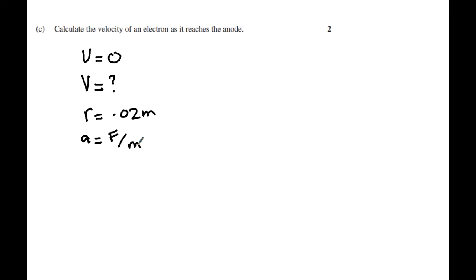Now you notice I've got u, v, r and a, and automatically I can actually determine the velocity by using the formula v squared is equal to u squared plus 2ar.